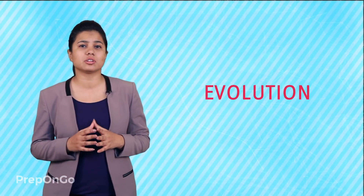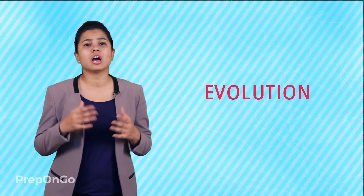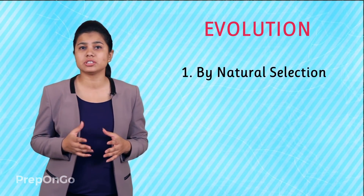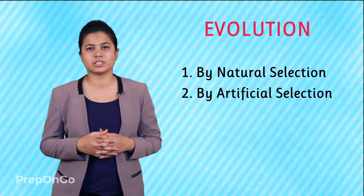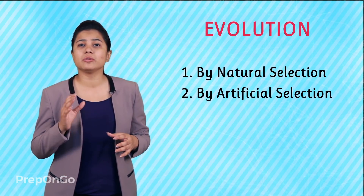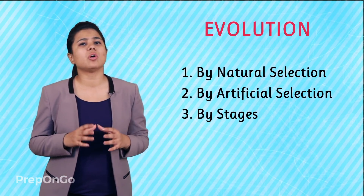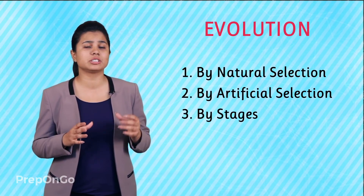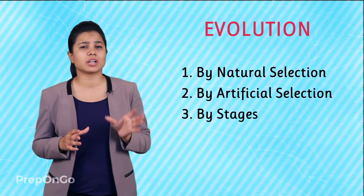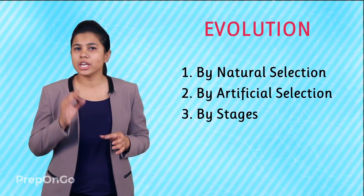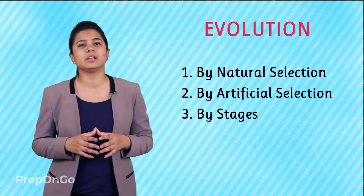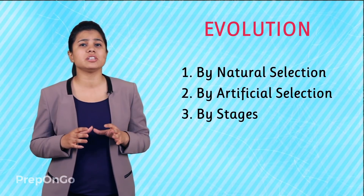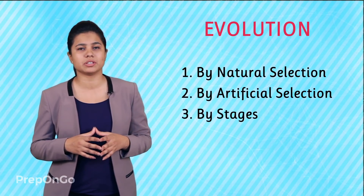Hello everyone. In our previous videos, we have seen the different techniques of evolution. We have seen how evolution takes place by natural selection and also by artificial selection. We learned about evolution by stages. In all these techniques, the common pattern that we observed was that the species undergo structural changes in their bodies in order to adapt to the environment, and sometimes these changes were forced by artificial methods.